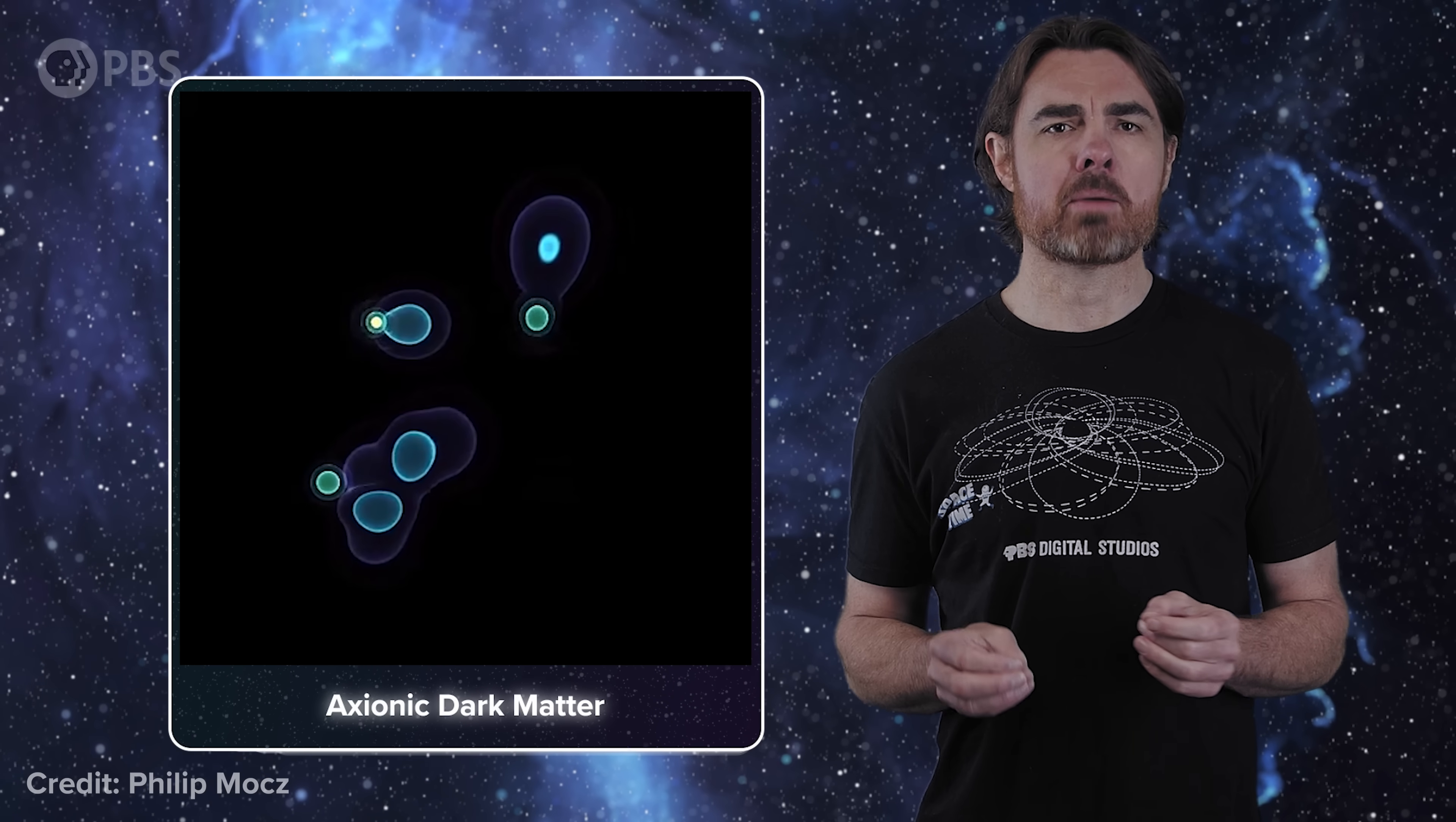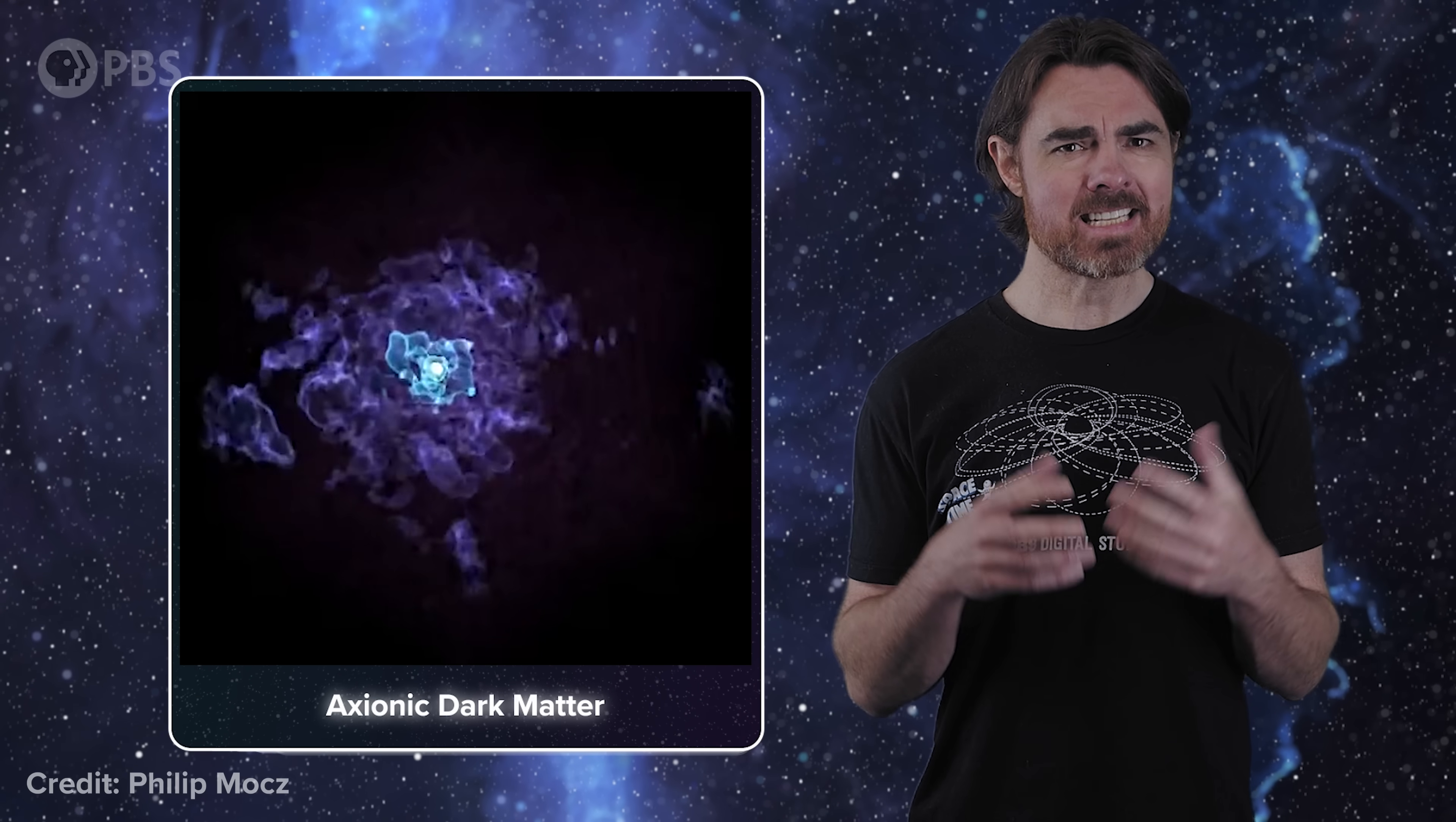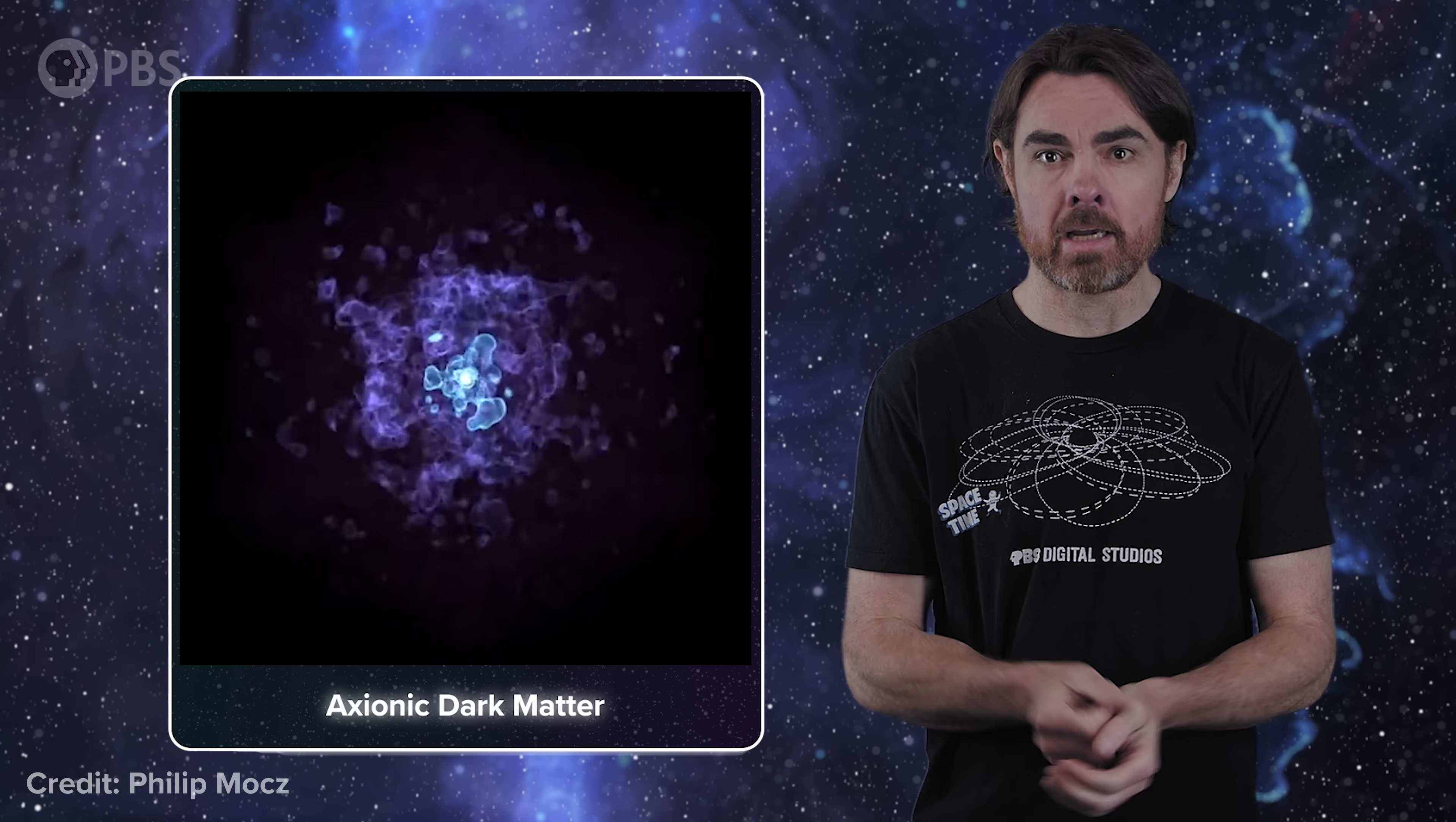Instead, imagine some clouds of axionic dark matter in the early universe as simple spherical waves, like ripples. These would fall towards each other under the influence of gravity, and as they collide they create rippling vibrations that pass through each other and interfere, just like the ripples on a pond. But as these waves get all mixed up and pulled back into the growing gravitational well, they create interference patterns of increasing complexity as the waves overlap. What we're left with is a messy, bubbling interference pattern of gravitationally bound dark matter waves sloshing around in the shape of a halo.